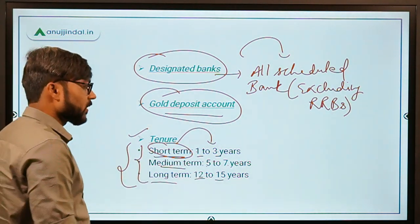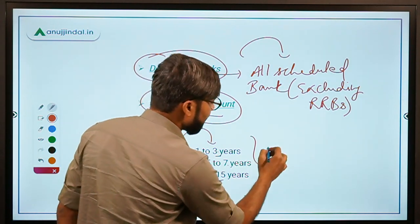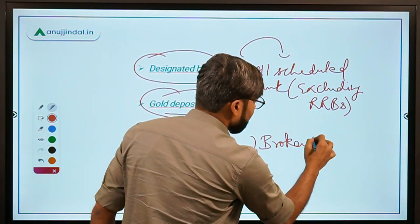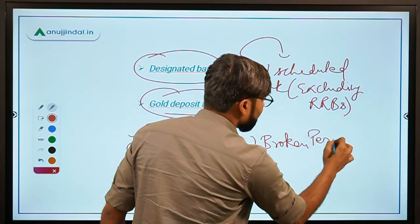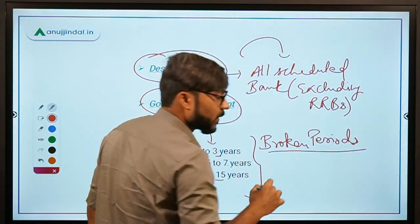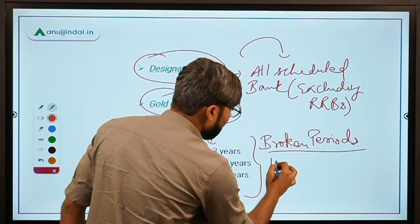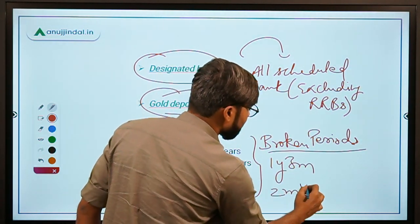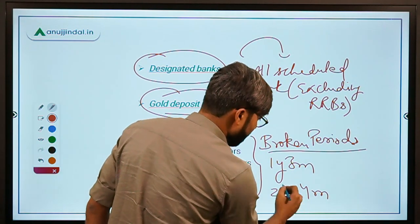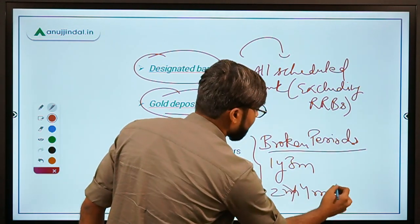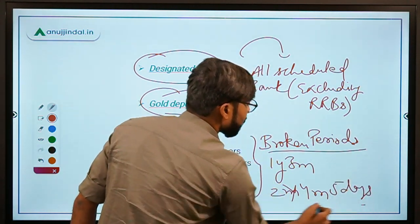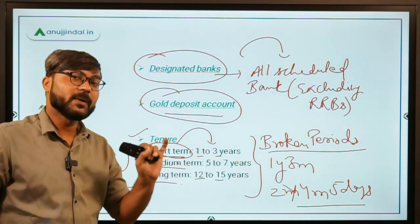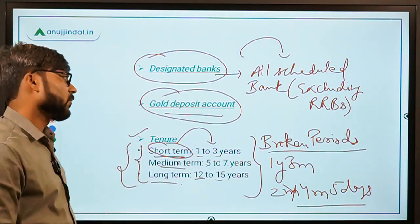You can also deposit for broken periods — meaning non-standard durations such as 1 year 3 months, or 2 years 4 months 5 days, and so on. Deposits under broken periods are also allowed.